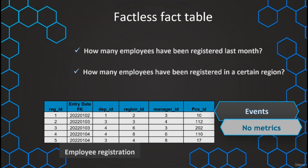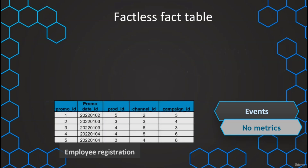We can also answer questions like how many employees were registered in a certain region or department. Whenever we just want to record events without any metrics, we can still use a factless fact table. Another example is promotions with no metrics associated — just an event with a promo code, a product being promoted, and a campaign. We keep track of those events in a fact table, recording the occurrence and all associated dimensional aspects.